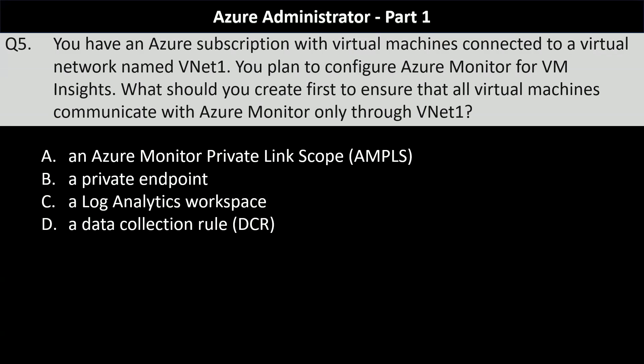The correct answer is option A, an Azure Monitor Private Link Scope. An Azure Monitor Private Link connects a private endpoint to a set of Azure Monitor resources to define the boundaries of your monitoring network. That set is called an Azure Monitor Private Link Scope.